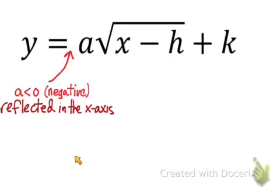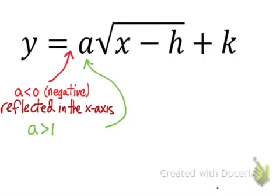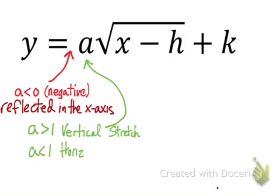If a is positive, the curve still goes up in the positive direction, just like the parent function. But if it's negative, it's going to reverse. Now looking at the digit value of a itself — if a is greater than 1, we have a vertical stretch. If a is less than 1, we're going to have a horizontal stretch.